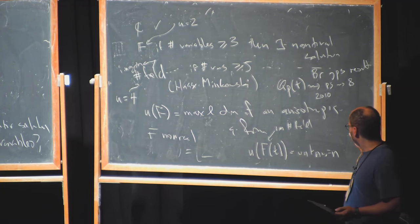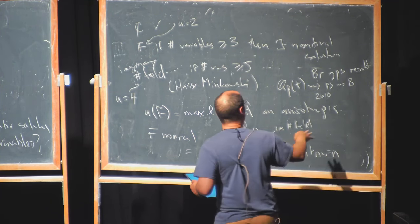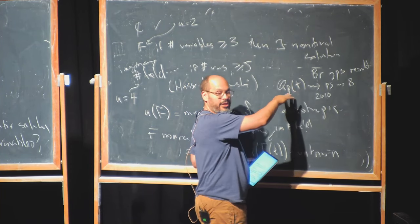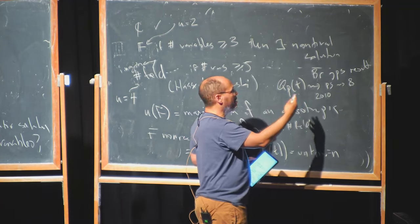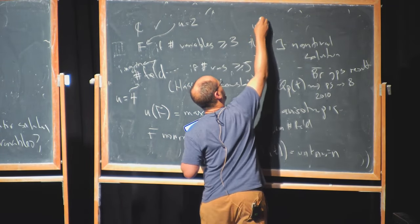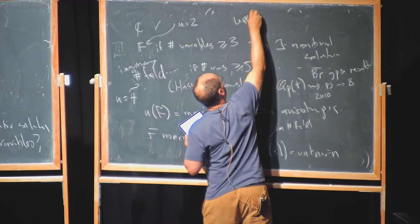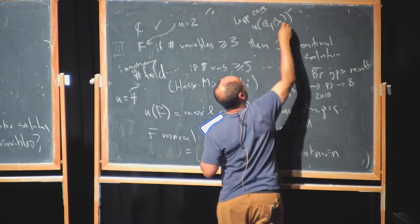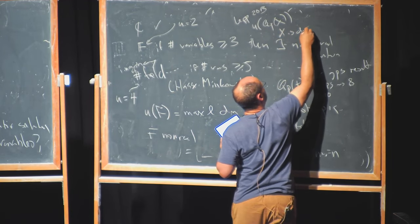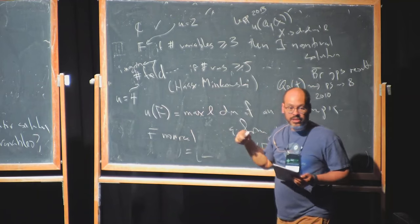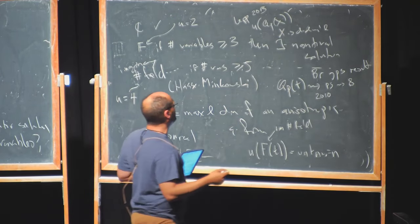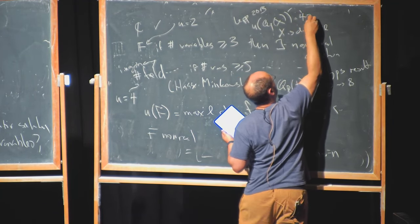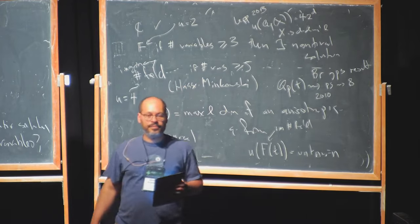And then just a few years later, the case of much more general function fields in many variables — these u-invariants were calculated, and by a result of Leep in 2013, if you look at a d-dimensional variety and its function field, every dimension makes the u-invariant go up by a factor of two. So Qₚ itself has u-invariant four, giving you four times two to the d.